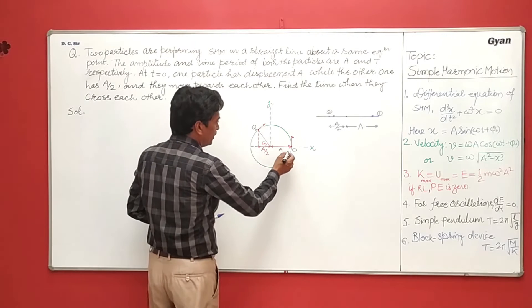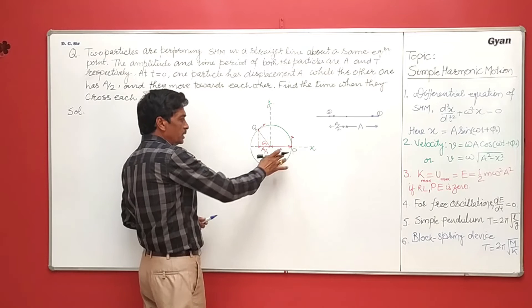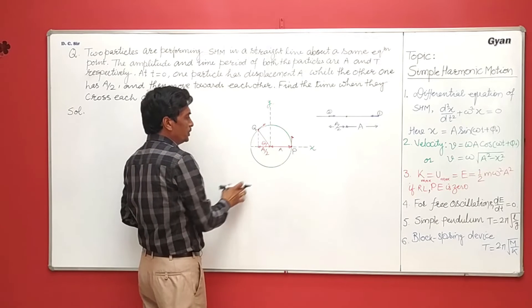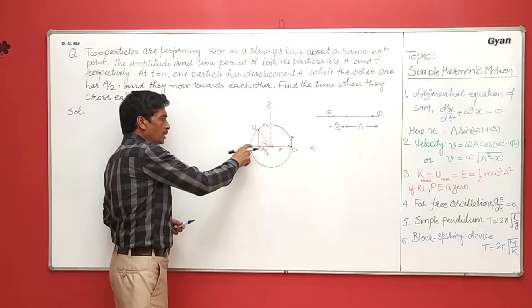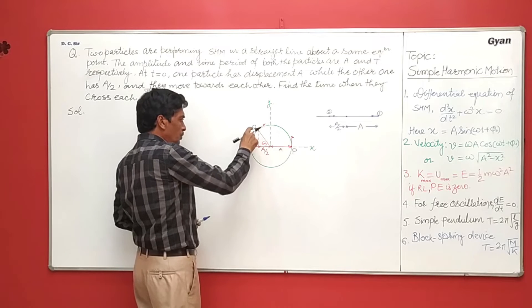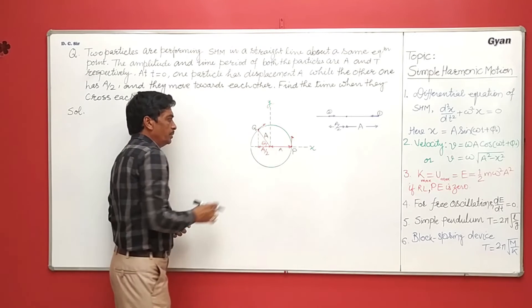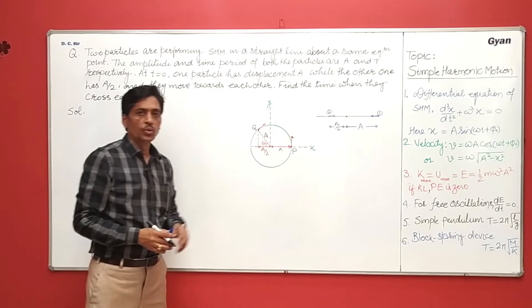So let us say a particle starts from this point and this is the equilibrium position. So it is at a distance a from the equilibrium position. And the second particle at a distance is here a by 2. So it should be at a position q. If it is a, then this distance will be a by 2 if it is 60.